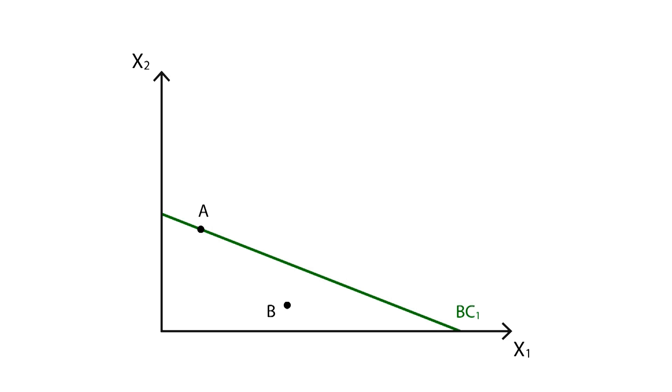Since A contains more good, at the given prices and given the budget constraint, A is preferred to B. In this case, we say A is revealed as preferred to B, using what we call the weak axiom of revealed preference.